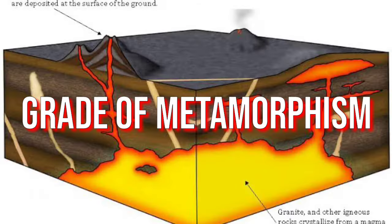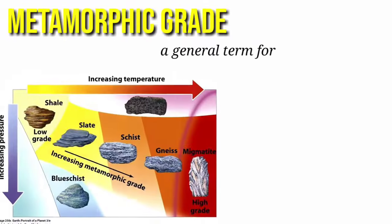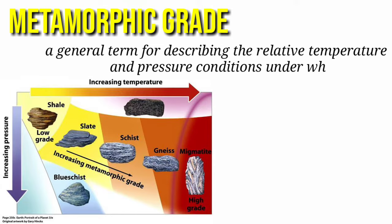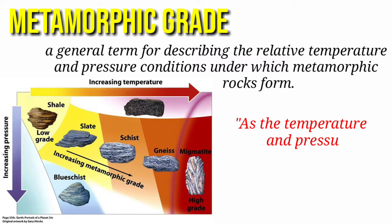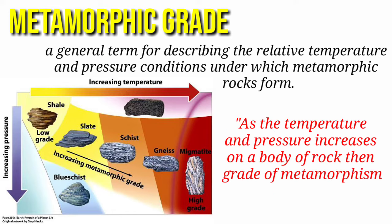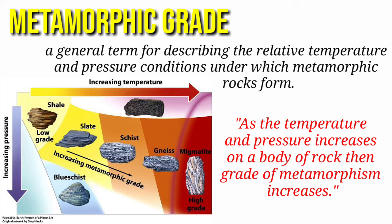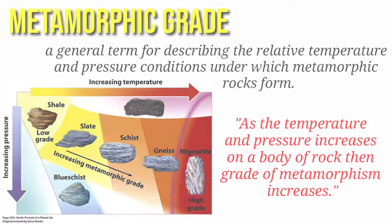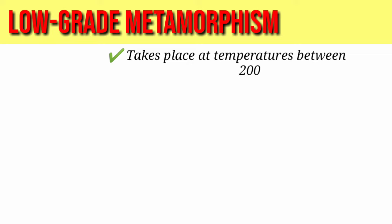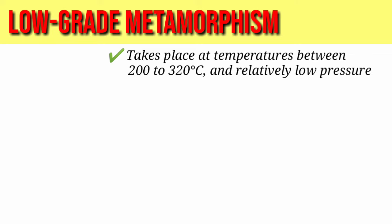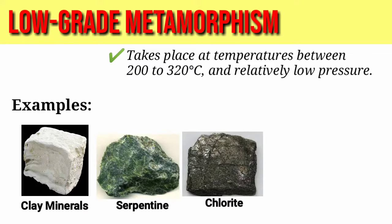Grade of metamorphism. Metamorphic grade is a general term for describing the relative temperature and pressure conditions under which metamorphic rocks form. As the temperature and pressure increase on a body of rock, the grade of metamorphism increases. Low-grade metamorphism takes place at temperatures between 200 to 320 degrees Celsius and relatively low pressure.